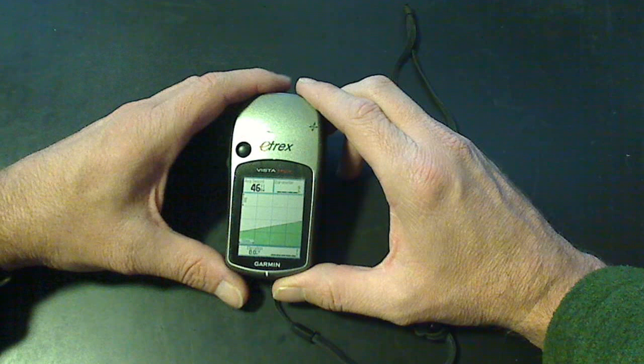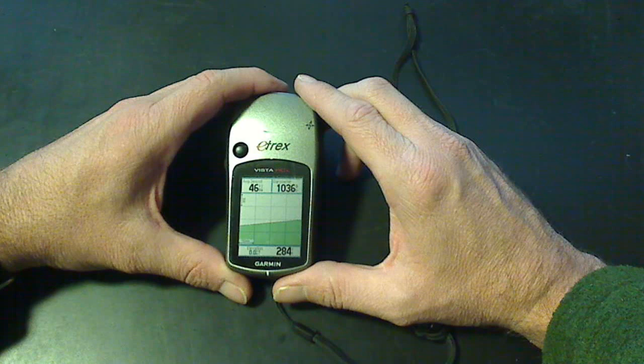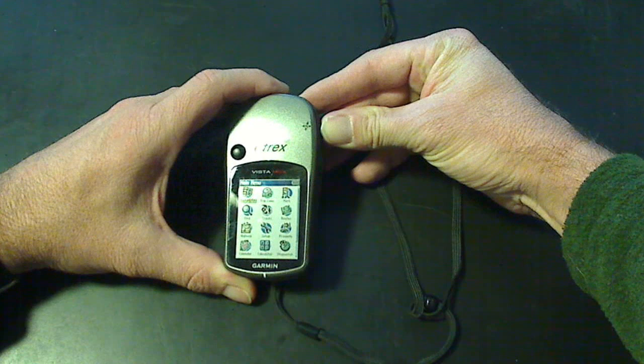It says okay. So altimeter was off by a little bit, before it said 400 feet. Now it says 284 feet, and that's the correct elevation for my property.